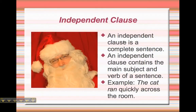First, we have an independent clause. An independent clause is a complete sentence — which is why it's independent. It's complete, it can stand on its own. An independent clause contains the main subject and verb of a sentence. So the example here that we have is: the cat ran quickly across the room. The cat ran can stand on its own, which makes it an independent clause.